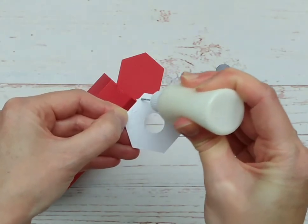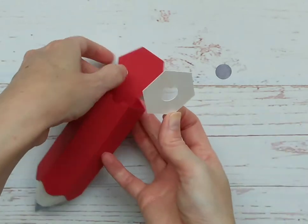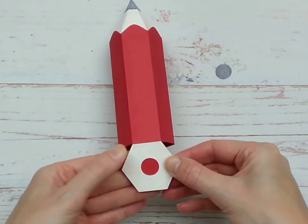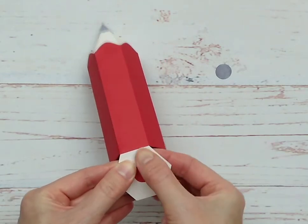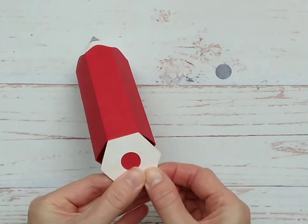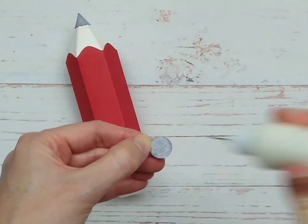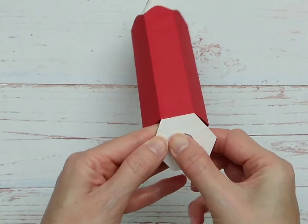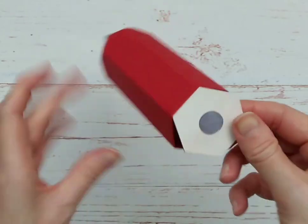And this part is for the end of the pencil. I've used a sort of peachy color for this one. I'm going to press it on. And because I've chosen to use a grey lid, I need to put a grey circle in the end. But of course, if you choose to do a colored pencil, you could just leave that open.